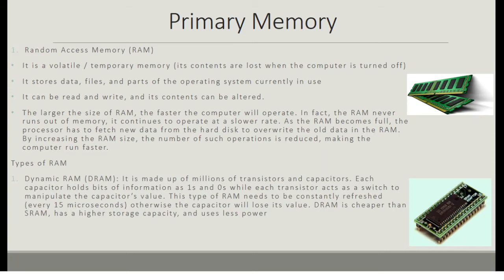Types of RAM. Dynamic RAM or DRAM is made up of millions of transistors and capacitors. Each capacitor holds bits of information as 1s and 0s, while each transistor acts as a switch to manipulate the capacitor's value. This type of RAM needs to be constantly refreshed about every 15 microseconds, otherwise the capacitor will lose its value. DRAM is much cheaper, has a higher storage capacity, and uses less power.